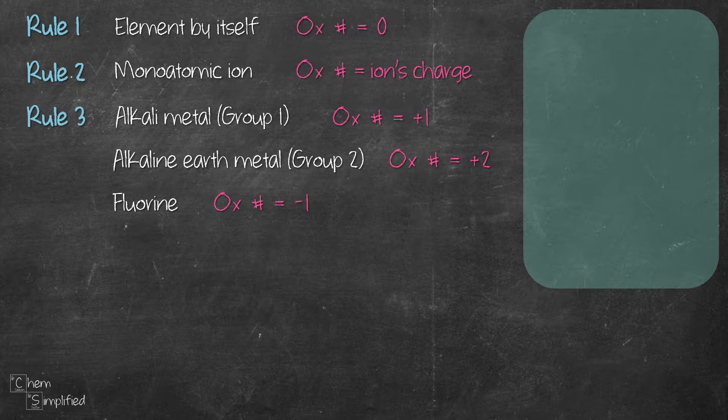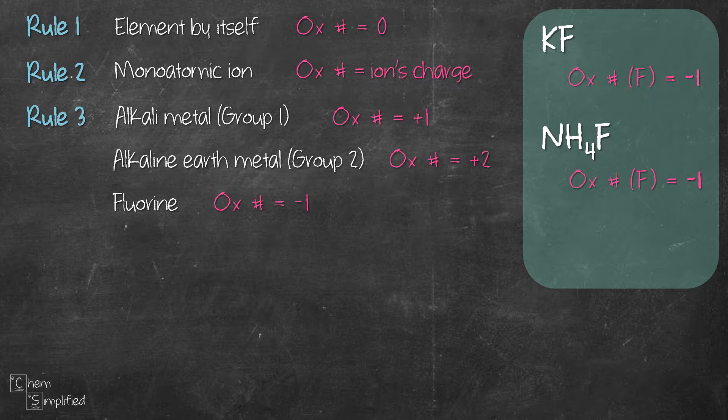Oxidation state of fluorine in a compound is negative one. For example, oxidation number of F in KF and NH4F is minus one. However, if it's just F on its own, like F2, the oxidation number is zero, which follows rule number one. So remember, rule number three only applies to compounds.